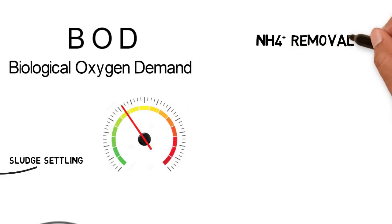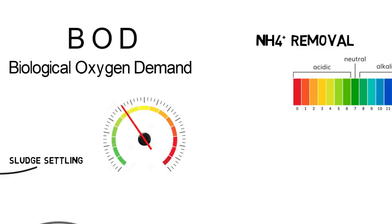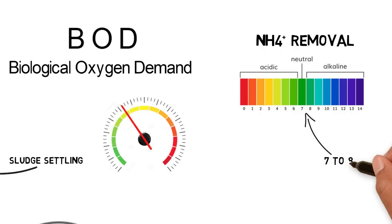Bacteria for ammonium removal are more difficult to cultivate and require certain conditions such as the right pH value and water temperature.